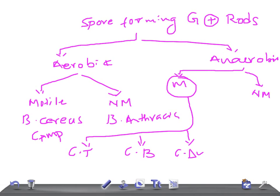In the non-motile anaerobic spore-forming group, we have Clostridium perfringens. So that's how you classify gram-positive rods. I hope this video was really very helpful for you. Thank you so much for watching. Please subscribe to our channel and share our videos with your friends.